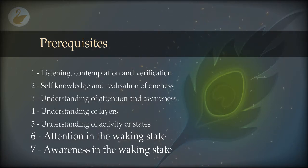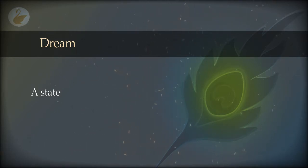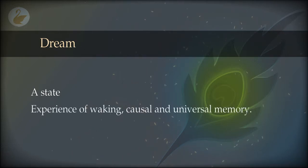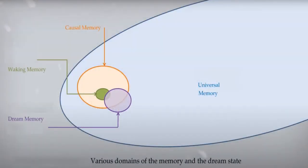Before we go ahead and experiment on dreams, let us define a few things. What is a dream? You will say you know it — it is a state of the memory. More precisely, these are the experiences of an area of memory that includes the waking state memory, some of the causal memories, and some areas in the universal memory. This picture shows a schematic representation. The big blue oval is the universal memory, and there is an orange circle which is the causal memory. Inside the causal memory is shown the waking memory. The experiences from the dream state are the purple circle, which overlaps all three domains of memory.